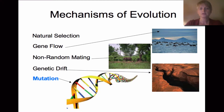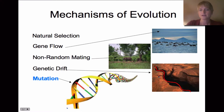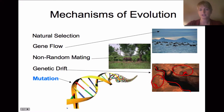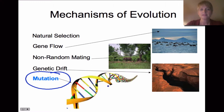Genetic drift is another mechanism of evolution. Imagine a population living on a cliff top, and an earthquake creates a chasm, splitting them into two groups. Over long periods of time, each group will change differently from the other — that's genetic drift.